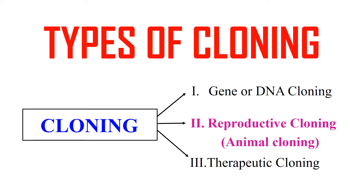Now, what are the different types of cloning? Generally, cloning can be divided into three types. First, gene or DNA cloning. Second, reproductive cloning, which is also known as animal cloning. And third is therapeutic cloning. Let's discuss these types of cloning in a little bit more detail.